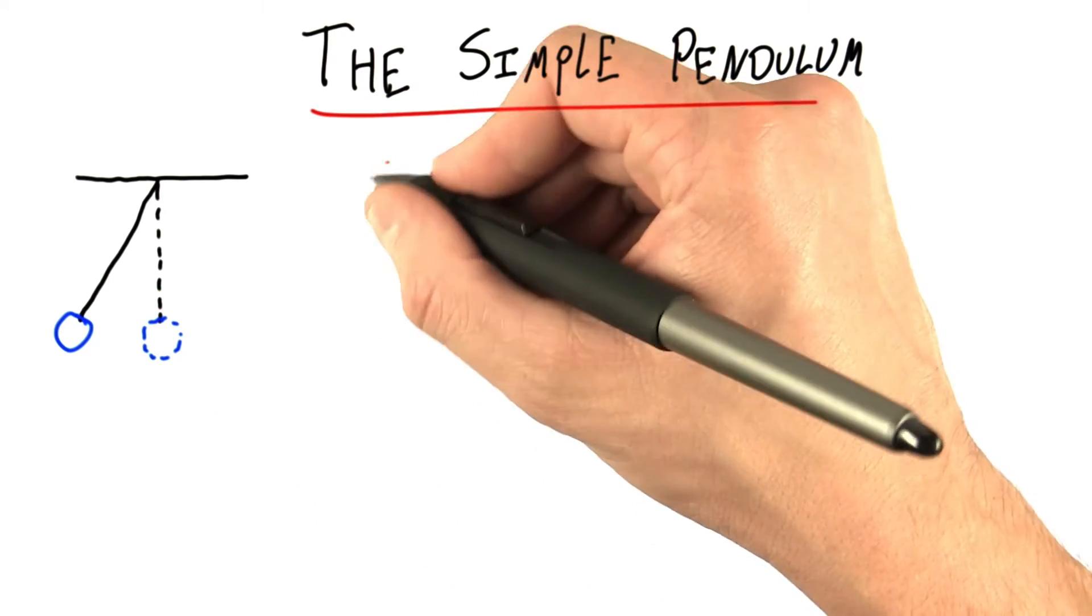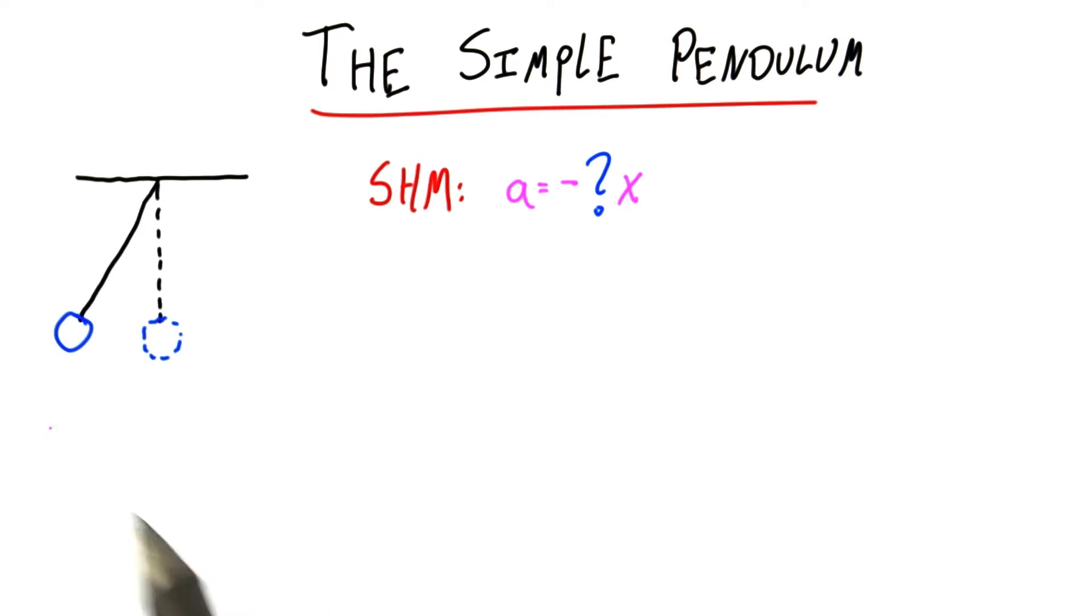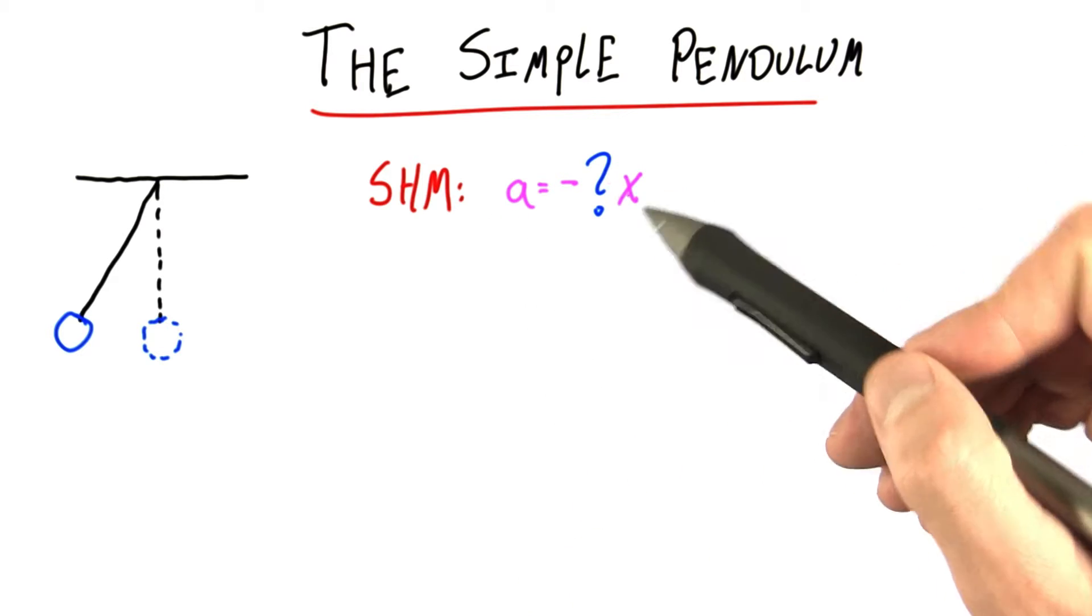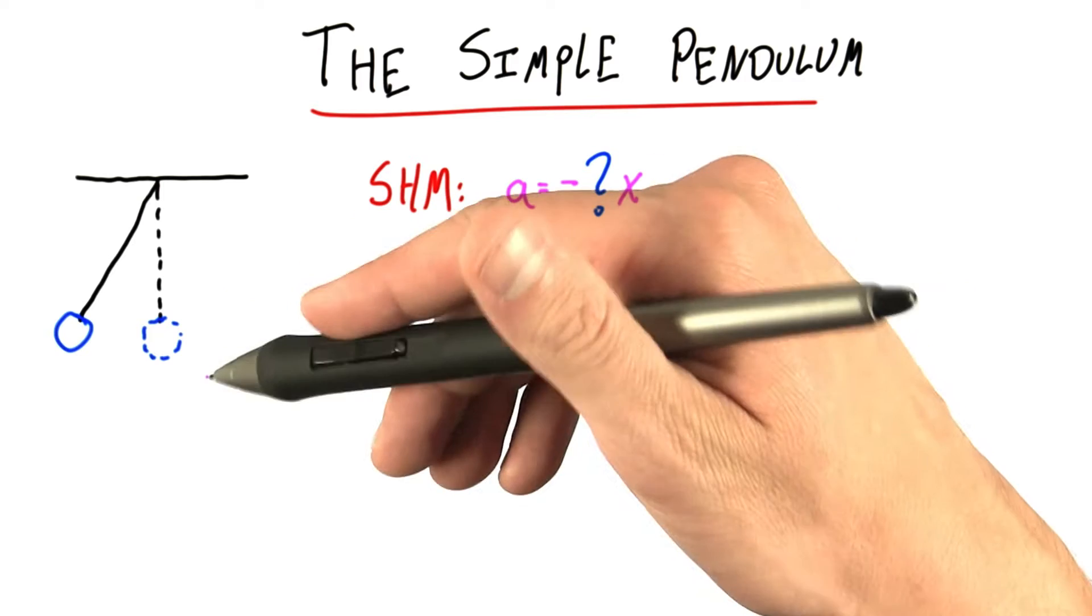We expect this pendulum to give us simple harmonic motion, which means when we work out the forces and acceleration, we want to get some acceleration that looks like minus something times x. So let's look at the forces and see if we can get that, because we want to understand what's going on here.